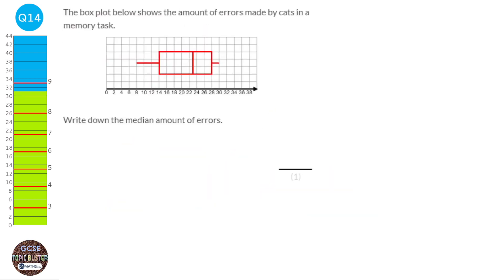The parts of a box plot are: the lowest value on this side, the lower quartile here, the median here, the upper quartile, and then the highest value. The median is this part here, and we can see that it is at 23. So the median is 23.